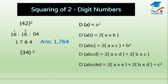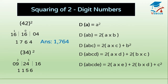Now find the square of 34. Square of the unit digit 4: 4 fours are 16. Insert slash. Then multiply both digits: 4 threes are 12, double of 12 is 24. Then square of 3 — that will become 09. Write 6, 1 carries to 24: 24 plus 1 is 25 — write 5, 2 carries to 9: 9 plus 2 is 11. Your answer is 1156.